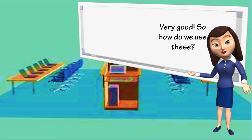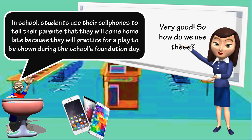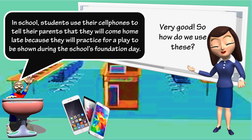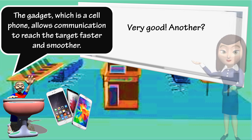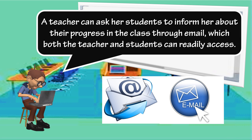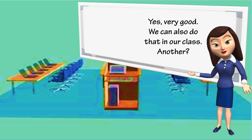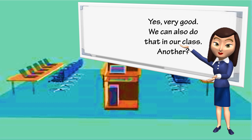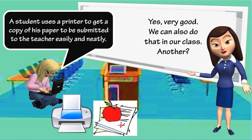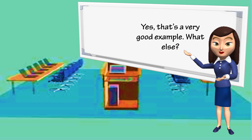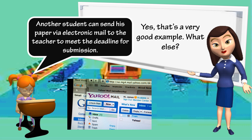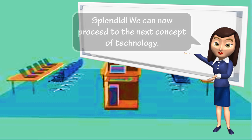In school, students use their cell phones to tell their parents that they will come home late because they will practice for a play to be shown during the school's foundation day. The gadget, which is a cell phone, allows communication to reach the target faster and smoother. A teacher can ask her students to inform her about their progress in the class through email, which both the teacher and students can readily access. A student uses a printer to get a copy of his paper to be submitted to the teacher easily and neatly. Another student can send his paper via electronic mail to the teacher to meet the deadline for submission.